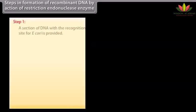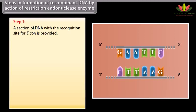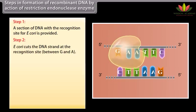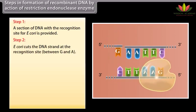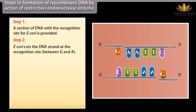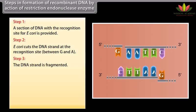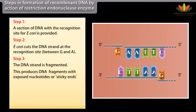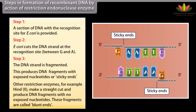Step 1: A section of DNA with a recognition site for EcoRI is provided. Step 2: EcoRI cuts the DNA strand at the recognition site between G and A. Step 3: The DNA strand is fragmented. This produces DNA fragments with exposed nucleotides, or sticky ends. Other restriction enzymes — for example, HindII — make a straight cut and produce DNA fragments with no exposed nucleotides. These fragments are called blunt ends.